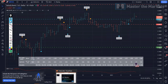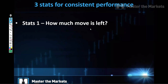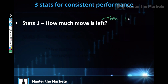The first stat that you need to know is how much move is left upon point of entry. This is a very important must-have trading statistic because, Traders, it is on the exits that you make your money — either you realize your profit or your loss. So every time upon point of entry, wherever you enter on the chart, you must know how much move is left.